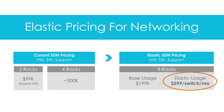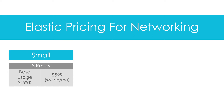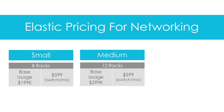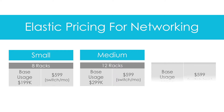Big Switch offers three models — small, medium, and large: an 8-rack system for $199k, a 12-rack system for $299k, and a 16-rack system for $399k. Peak capacity in either of these three options is priced at $599 a switch per month.